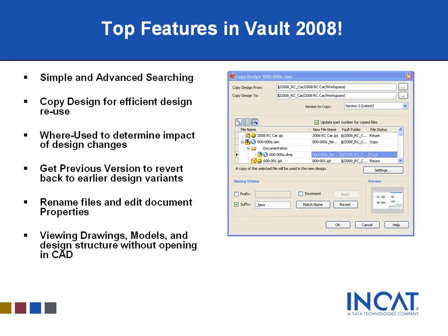Renaming files is something that commonly happens through Windows Explorer, but it often causes problems by unlinking or breaking any links between files — such as xrefs in AutoCAD, or links between parts, assemblies, and drawings in Inventor. Vault automatically knows what files reference which others and repairs any links between those files, so there are never unresolved xrefs or unresolved links between Inventor files.